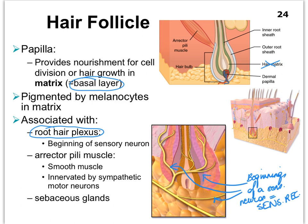For example, if a little bug is crawling on you and pushing against your hair follicles, the movement of the hair follicles is detected by this root hair plexus — the beginning of this sensory neuron. Consequently, electrical signals are going to be sent down this sensory neuron towards our central nervous system: the brain and the spinal cord, particularly the spinal cord first, and then eventually the brain.